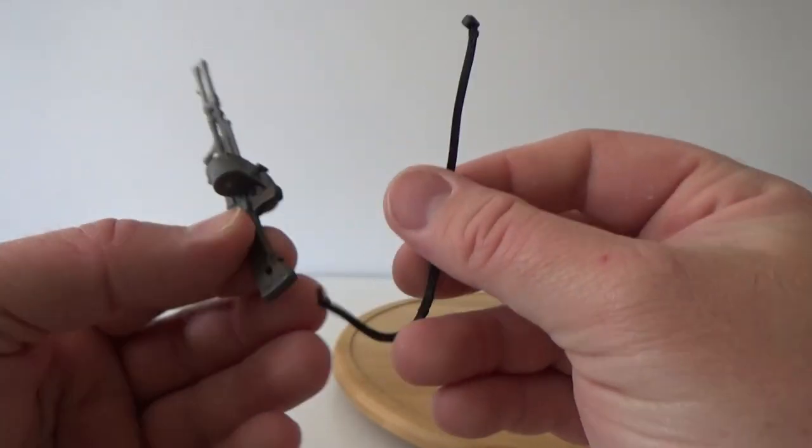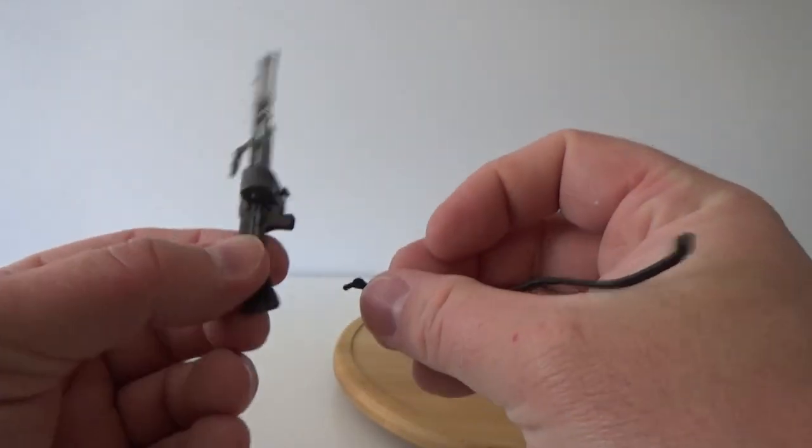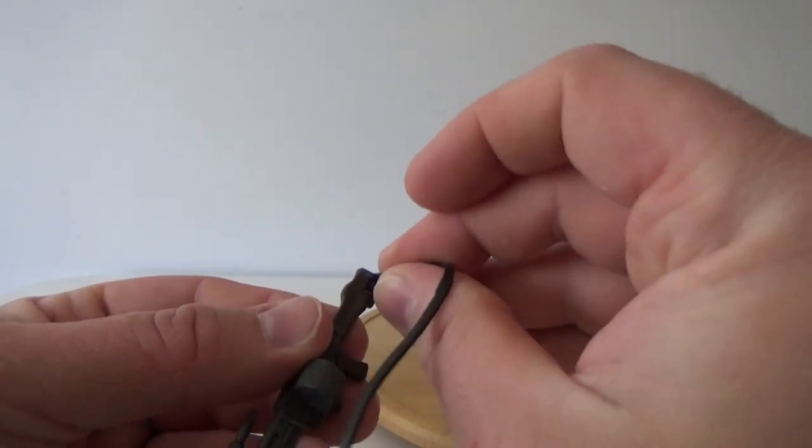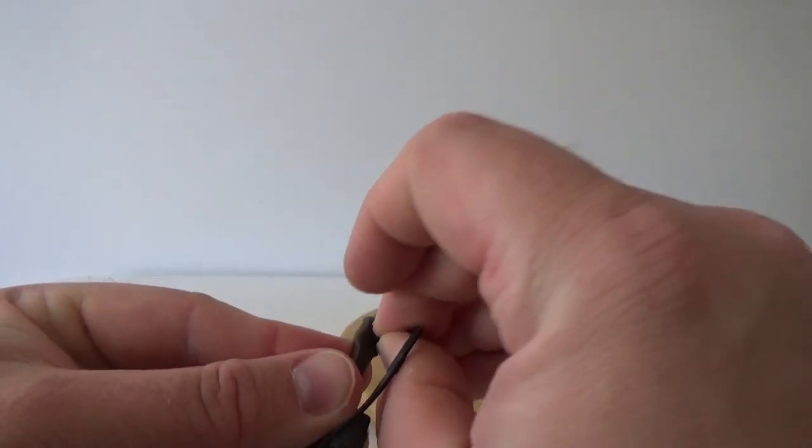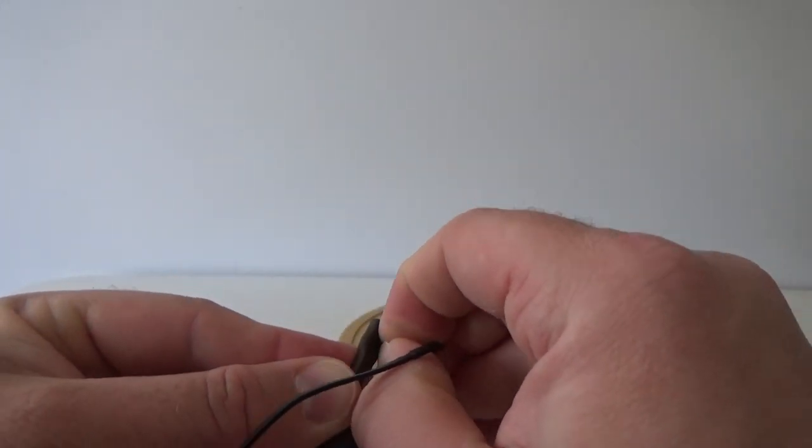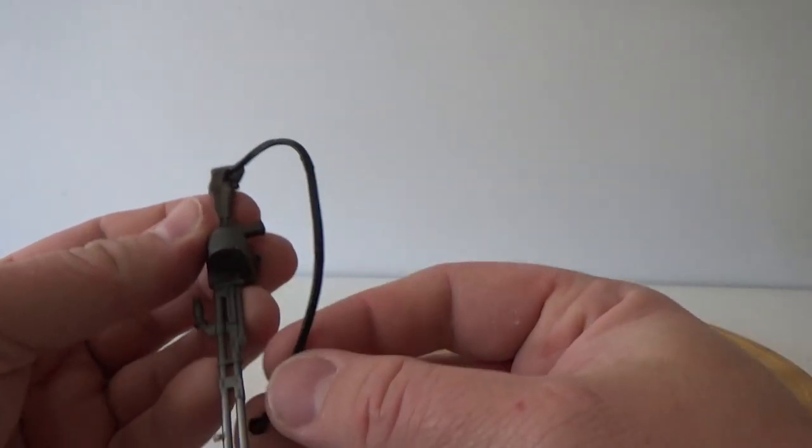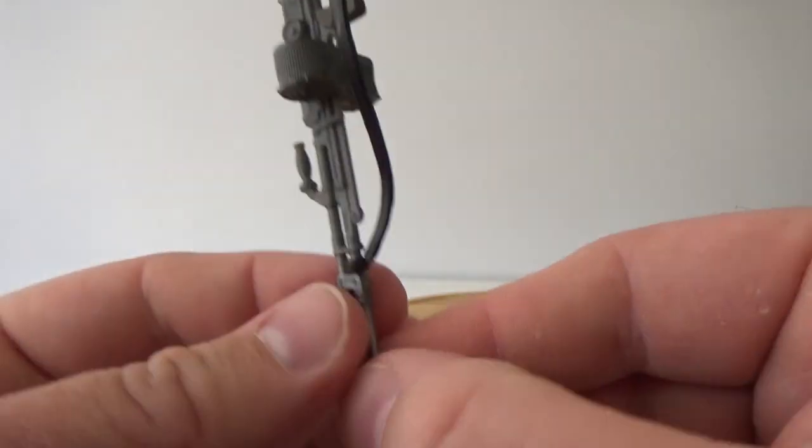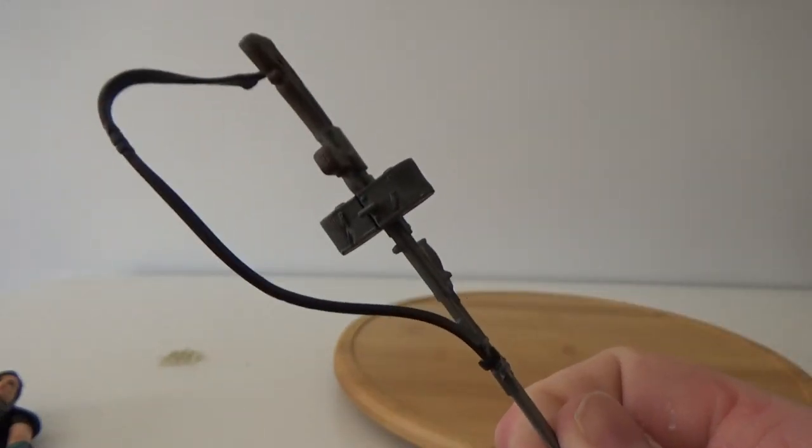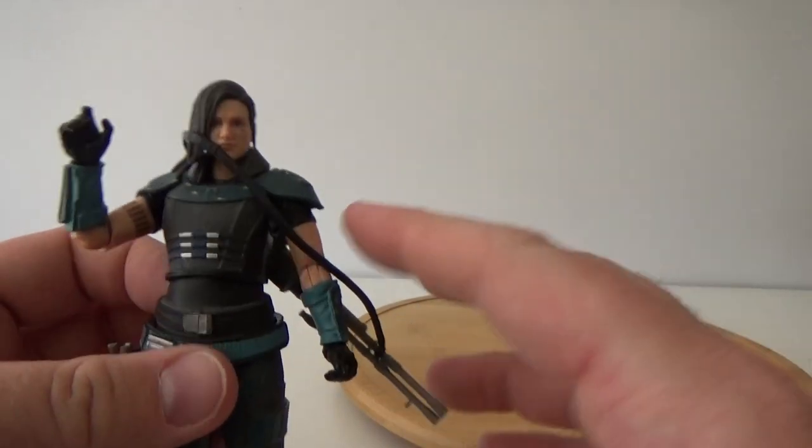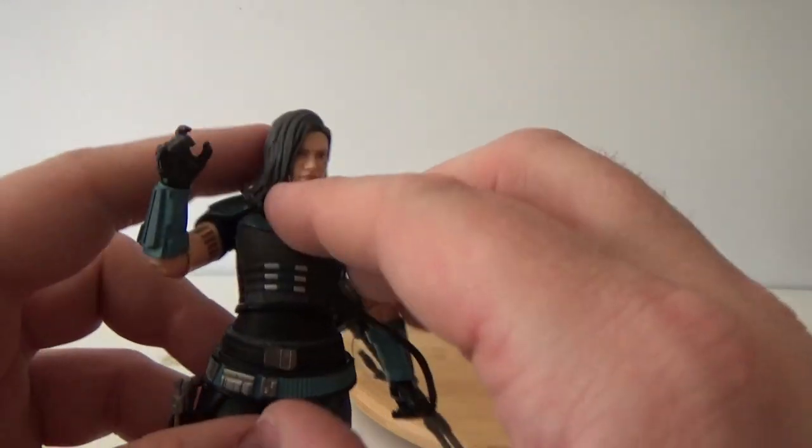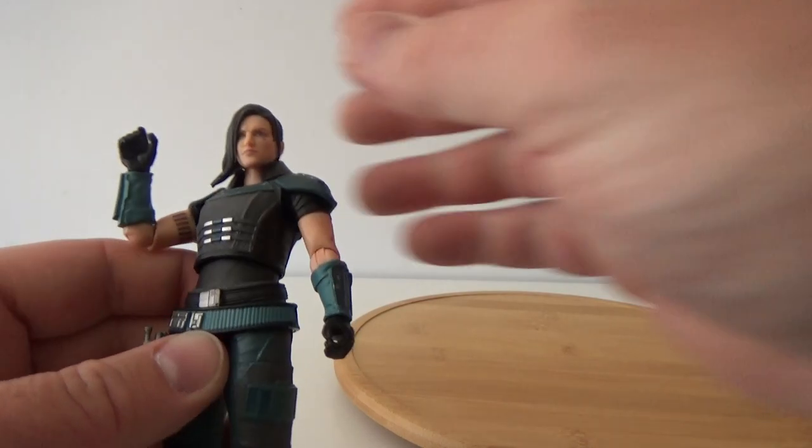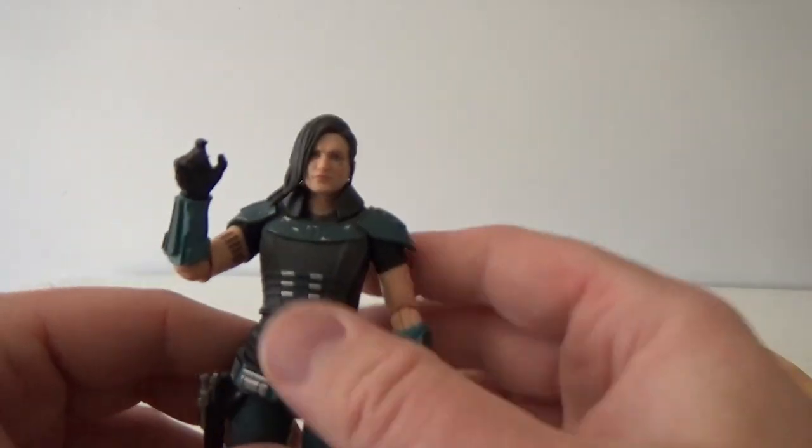It also comes with this strap which is attachable via a peg hole there. And it is a little bit tricky to get back in. But it does also just clip over the top of the barrel. So you can have her wearing this over her shoulder like that or something. But I'd rather have her armed and ready to kick some arse.